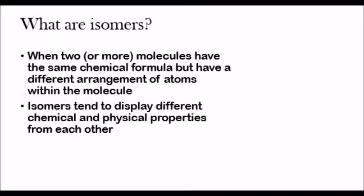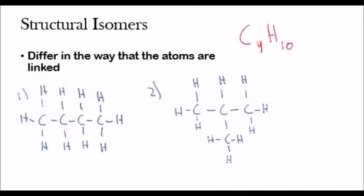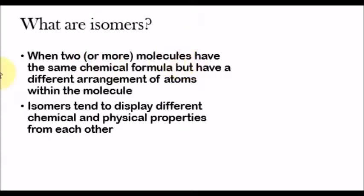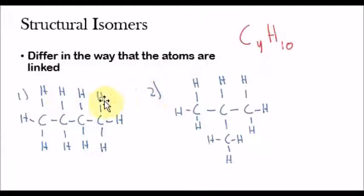The first type of isomer is a structural isomer. Structural isomers differ in the way that the atoms are linked. If you look here, both of these molecules have the same chemical formula but they have different arrangements.